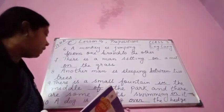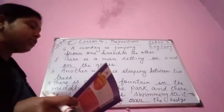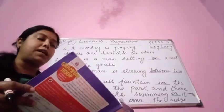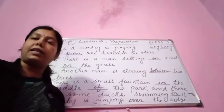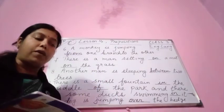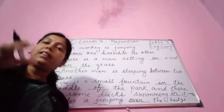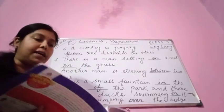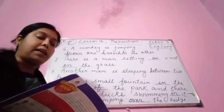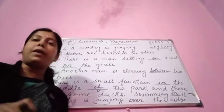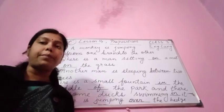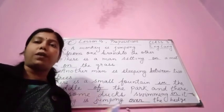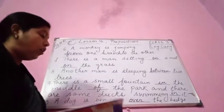Number 9: there is a small fountain in the middle of the park, and there are some ducks swimming in it. The fountain is in the middle of the park, and the ducks are swimming in the water of that fountain — so we say 'swimming in it'.